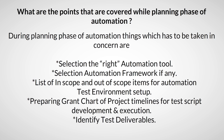During the planning phase of automation, things that need to be taken into consideration are: selection of the right automation tool, selection of an automation framework if any, list of in-scope and out-of-scope items for automation, test environment setup, preparing a Gantt chart of project timelines for test script development and execution, and identifying test deliverables.